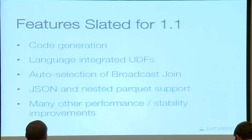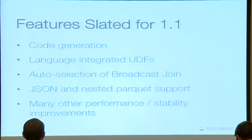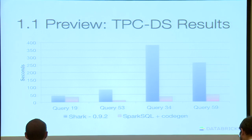Features slated for the 1.1 release include: the code generation patch I described, language-integrated UDFs, broadcast join with automatic cost-estimation selection, support for JSON and nested Parquet, and a whole slew of performance and stability improvements — so if you're still on 1.0, definitely check out 1.0.1. As a performance preview, comparing Spark SQL with the code gen patch against the most recent Shark release, it's faster in all cases — and for more complicated queries with heavy expression evaluation, we're seeing an 8x speedup over Shark.